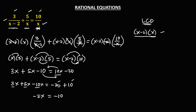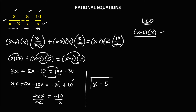Then equals negative 20 plus 10, that's negative 10. Then to solve for x, divide both sides by negative 2, so therefore x is equal to positive 5.